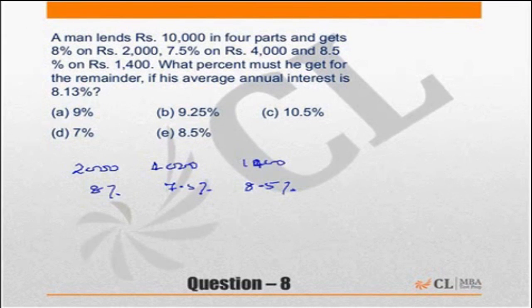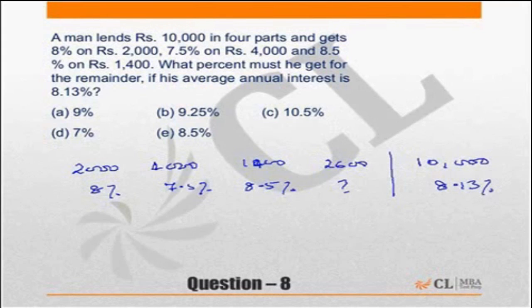What percentage must he get on the remainder? So what is the remainder? Rs. 10,000 minus Rs. 7,400 equals Rs. 2,600. He needs to get a percentage interest if his average annual interest is 8.13%. So on the total amount, the total amount is getting 8.13%. The question is what is this value? On this Rs. 2,600 how much interest should he get so that this will equal 8.13%? Now strictly speaking this is a question of weighted average and that is the way you should be doing this question.